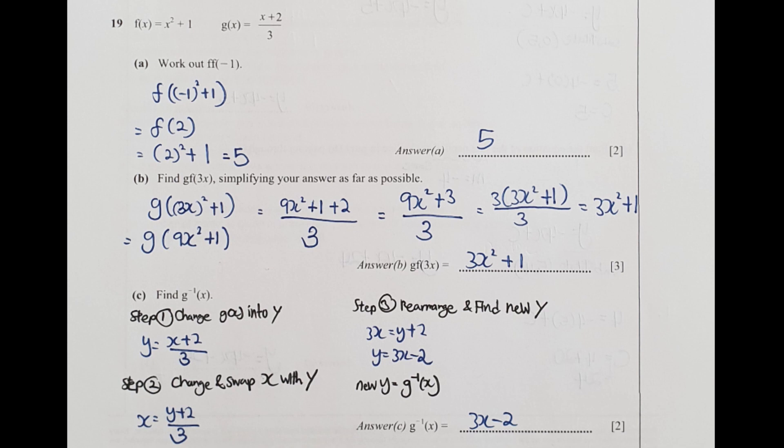Question 19, this is function question. First I substituted negative 1 into f and I got the result as 2, and I put the 2 into f again, so the final result is 5. Same thing for part b, I substituted 3x into x position, I get the result as 9x² plus 1. Then this 9x² plus 1 I fit it into gx x position. After the final calculation I get 3x² plus 1 as the result.